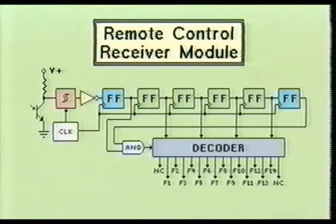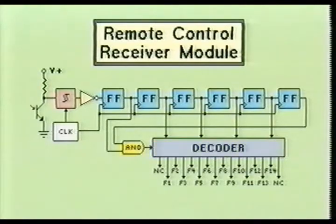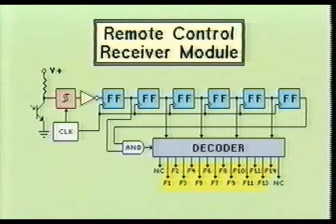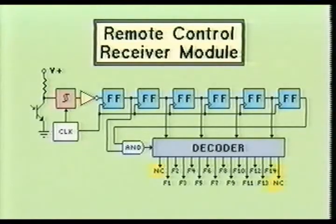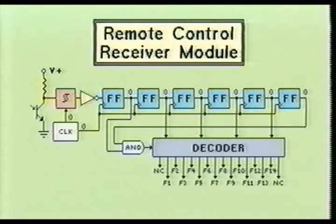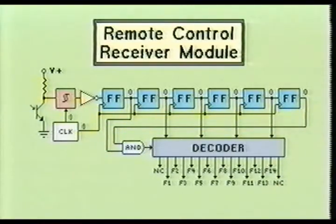The middle four flip-flops are used to provide the actual function control code to the decoder. When the AND gate enables the decoder, the decoder instantly processes the 4-bit function code at its input bus. Based on this 4-bit code, one of the decoder output function lines will be selected for the duration of this clock pulse. Each function line, except the two labeled NC, is routed to the next stage within the television receiver. The two NC function lines have no connection and represent the output which would be selected if the four middle flip-flops contained all binary 1s or binary 0s. This is a built-in feature to help prevent a false function code in the event that a very long infrared light pulse — not intended to operate this piece of equipment — reached the photo detector. This long IR pulse, representing all binary 1s, would be shifted into the flip-flops and acted upon like a legitimate function code when in fact it was not.